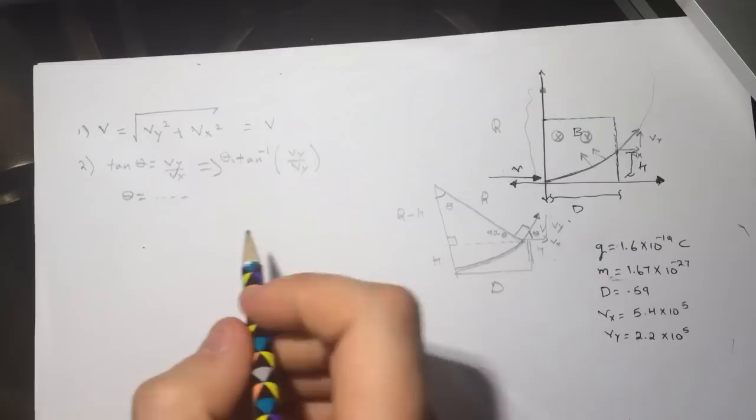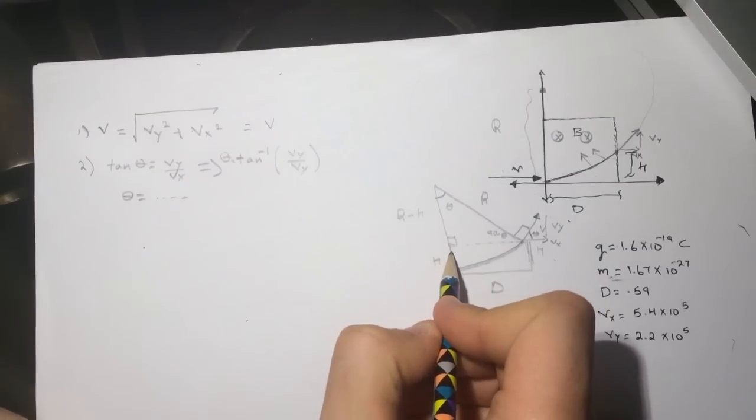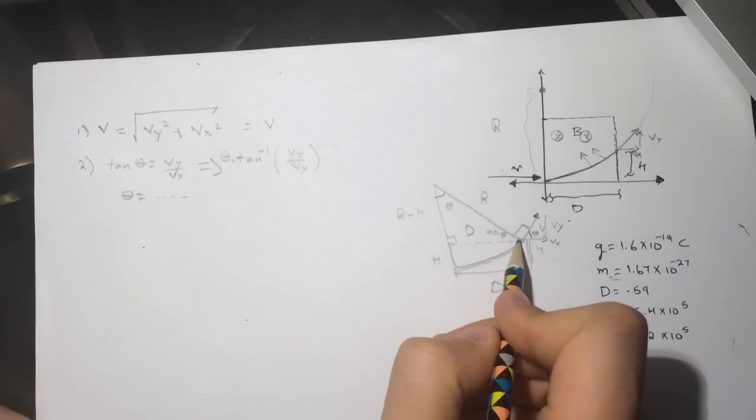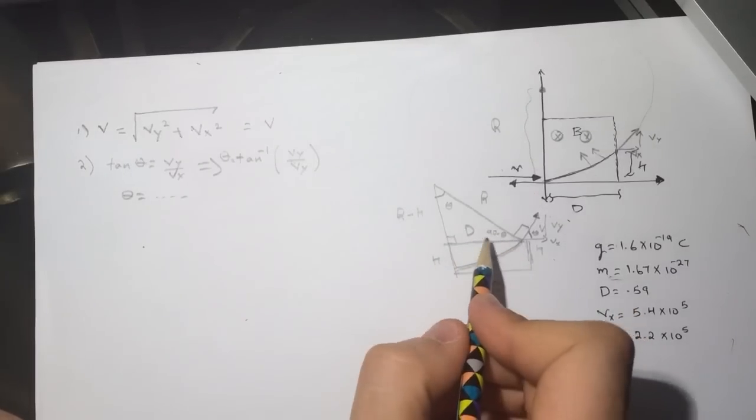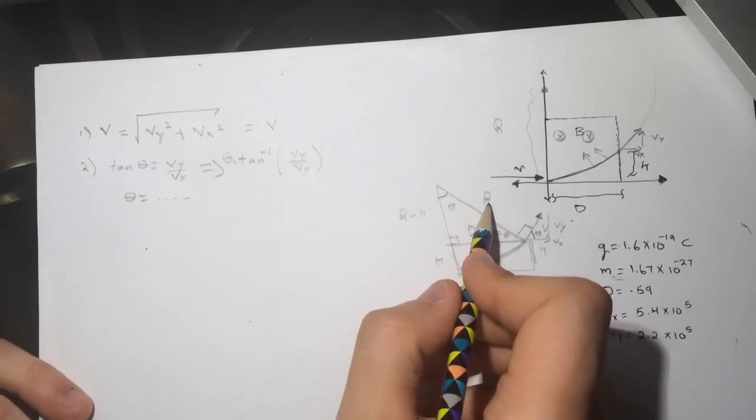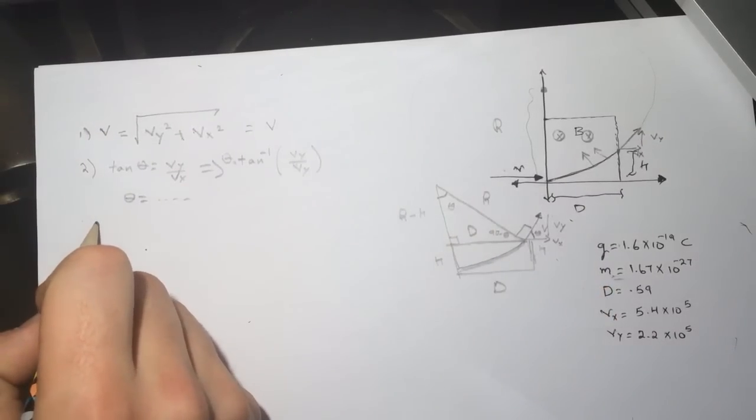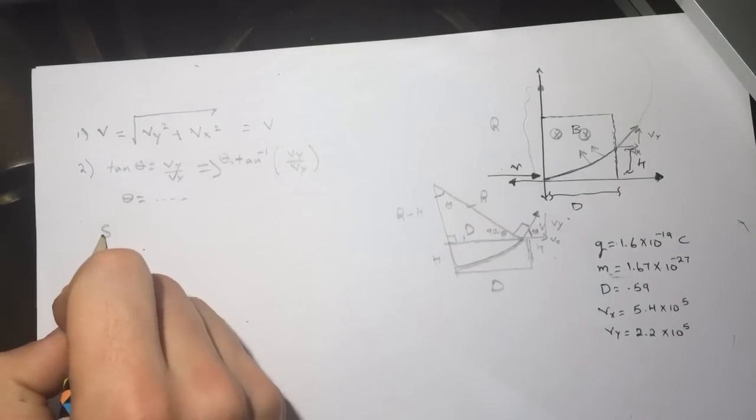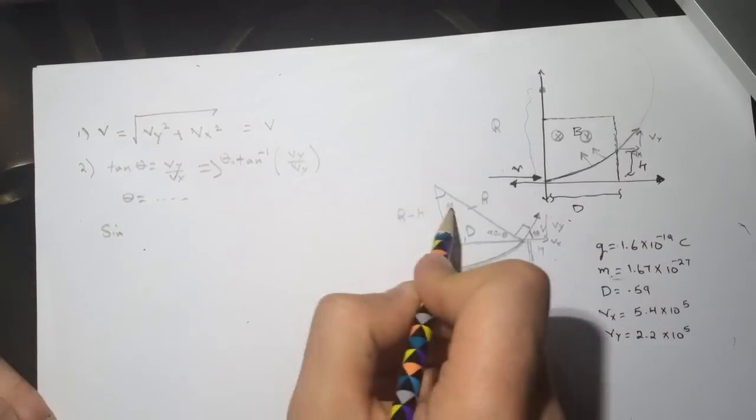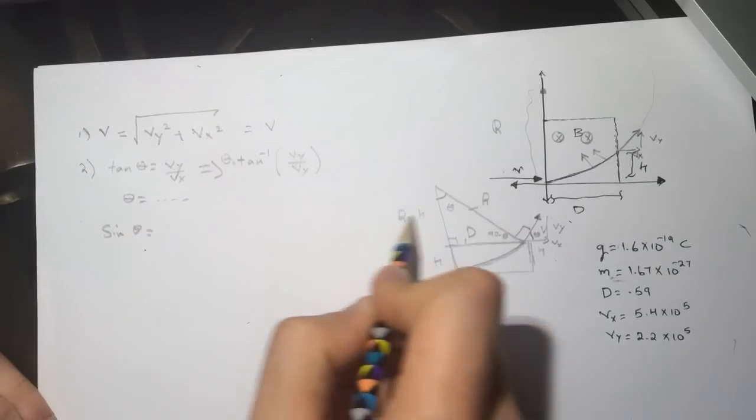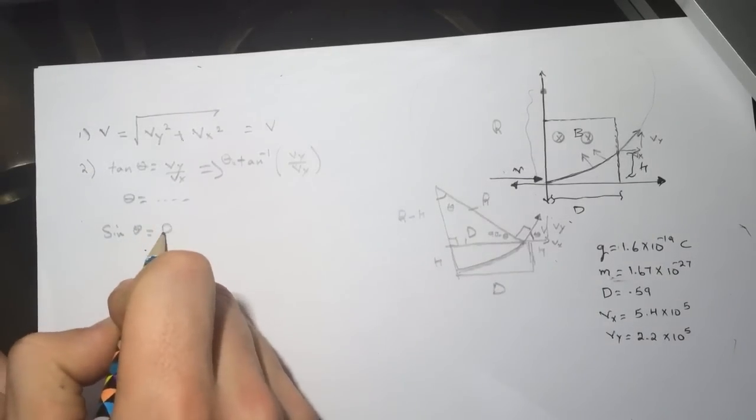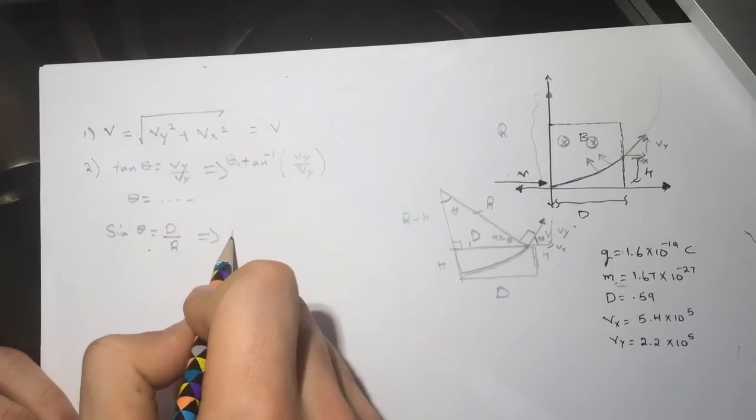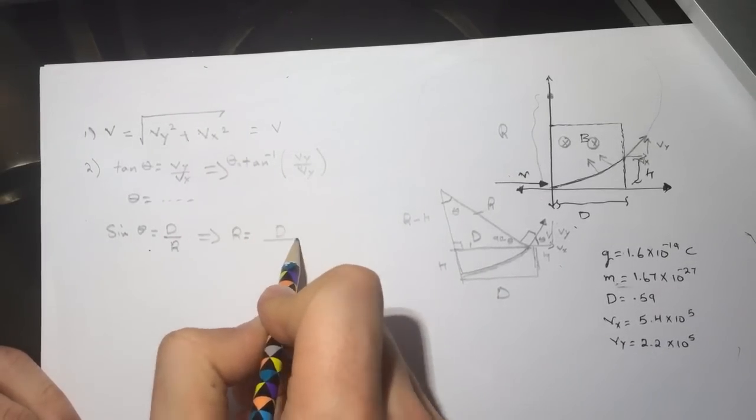All right, so this is the D here, it's the same as this one, and we have D here. So if we want to find the radius then we're gonna connect this and this, so sine of the theta will be equal to D over R. So the R will be equal to D divided by sine theta.